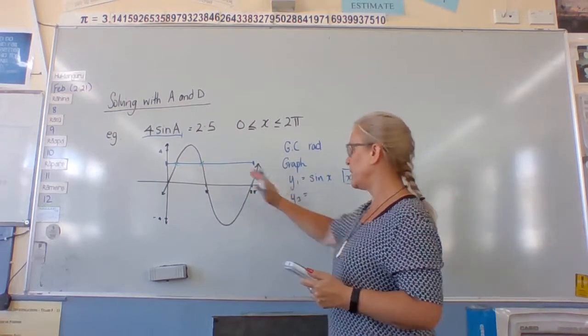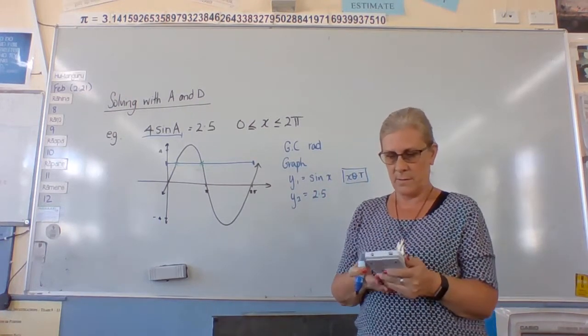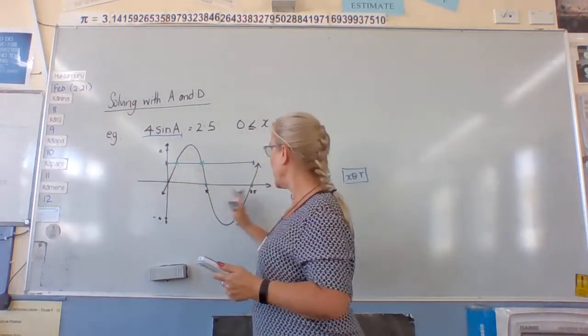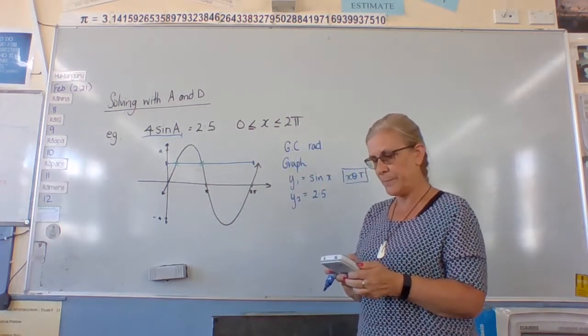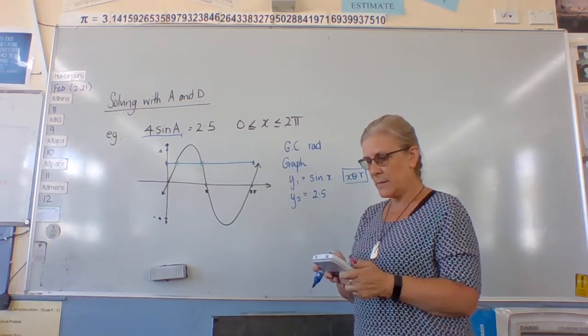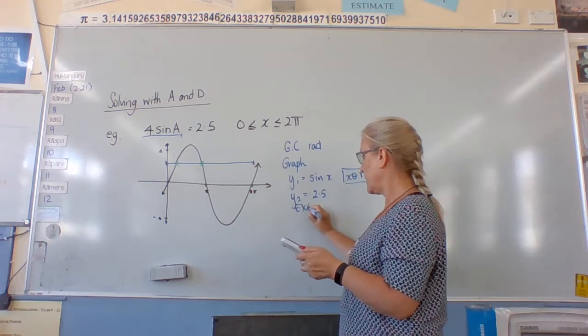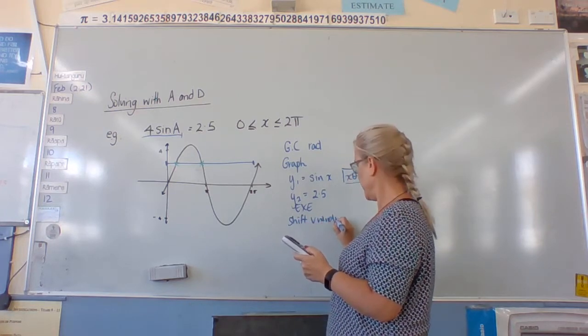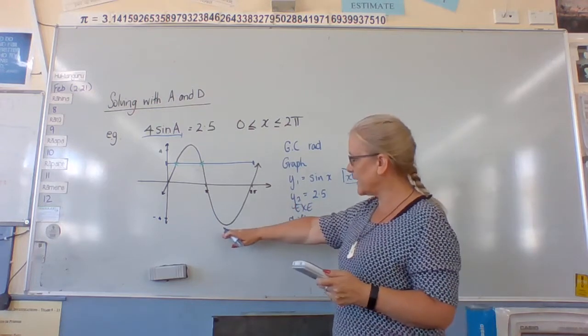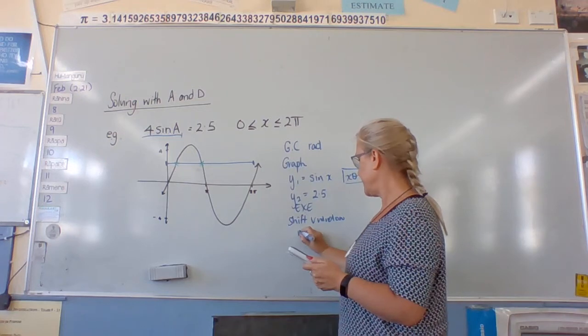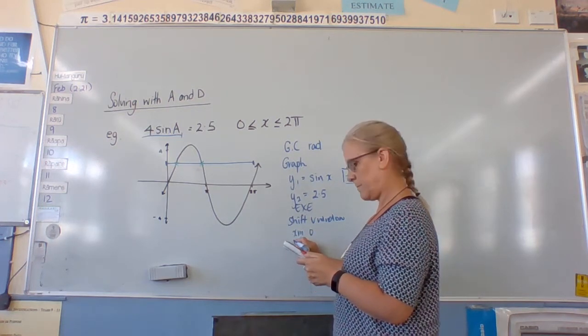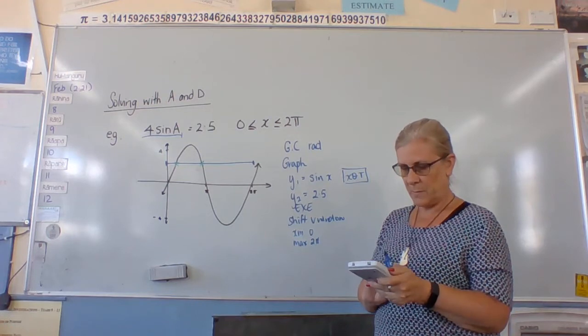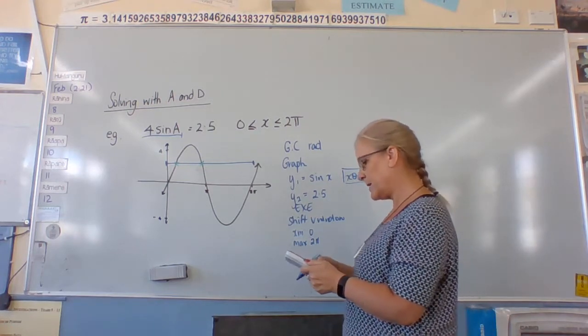Then we drop down to Y2 and we put the line in. So the line is 2.5. Next part we need to do is set it up so it shows us the part of the graph we want. So we're going to enter it. Then we're going to change the view window. So shift view window. And we're going to make the minimum for X to be 0 to 2 pi. And you can write 2 pi in. There's no problem with writing 2 pi in. 2 pi.